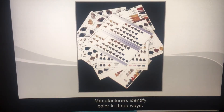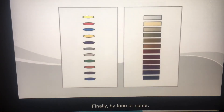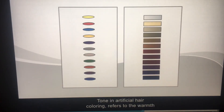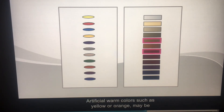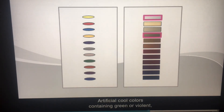Manufacturers identify color in three ways: first, by level and tone; second, by field and tone; and finally, by tone or name. Tone in artificial hair coloring refers to the warmth or coolness of a color. Artificial warm colors, such as yellow or orange, may be described as gold or auburn. Artificial cool colors containing green or violet might be described as ash or platinum.